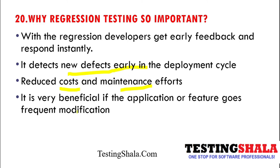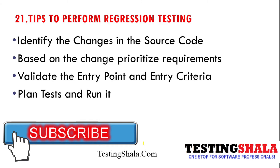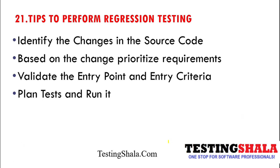Regression testing is especially beneficial if the application or a feature undergoes frequent modification. When performing regression testing, first identify the changes in the source code — you should not execute all thousands of test cases. Identify which feature, functionality, or code has been modified, and then pick only the surrounding test cases for execution. Also check for any changes in requirement prioritization and ensure entry and exit criteria are defined.